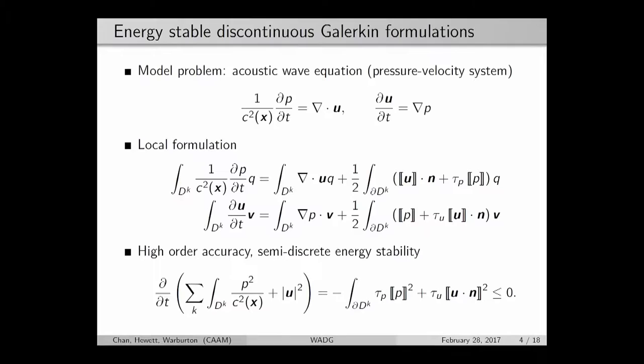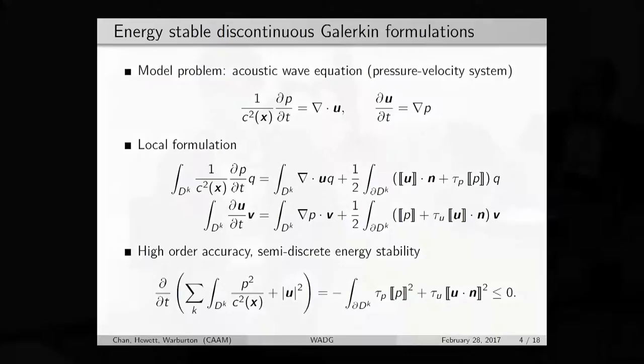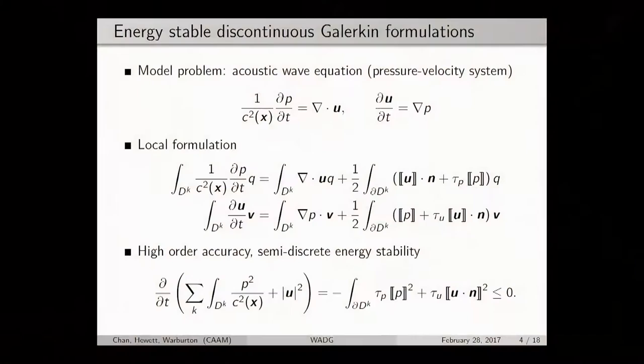I can construct a local DG formulation by taking both these equations, multiplying each one by a test function q and v, then integrating over an element d_k or d^k. Then I add coupling terms, numerical fluxes, which couple an element to all its neighbors through its faces. The advantage of this formulation is that I can get higher order accuracy and an energy stability estimate.